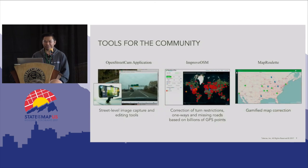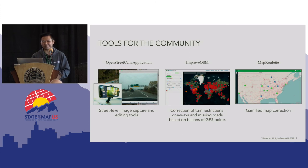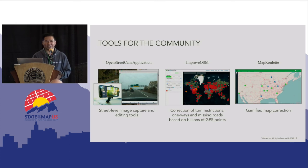Here are some of the tools that we use and share with the community. One of them is the OpenStreetCam app. We also have ImproveOSM, where we have hotspots of different locations where you can click down into a road and see a confidence level on the type of roads that need improvements. It requires manual editing to confirm that the data is good and to make corrections. There's also MapRoulette, which works like a game with different objectives, jumping you around so you can make corrections all over the world.